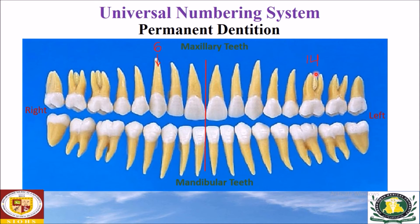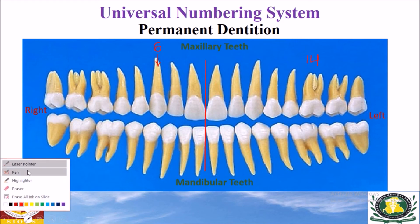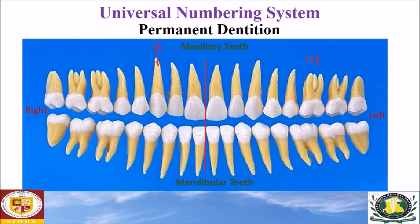Now, the left mandibular central incisor. This tooth is the left mandibular central incisor. In the universal numbering system, the number of this tooth is 24.